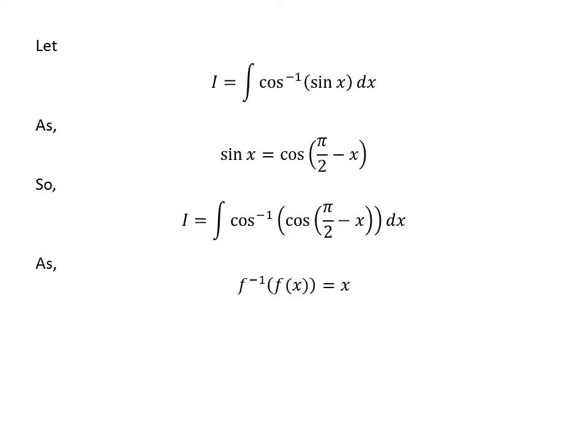As we know, inverse of function f of function f of x is equal to x. As arc cosine is inverse of cosine function, so arc cosine of cosine of half of pi minus x is equal to half of pi minus x.